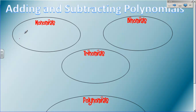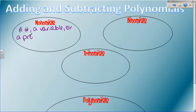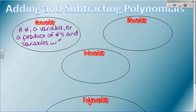We've done this before - when we did it before we called it adding like terms, but it's the same thing. The definition is really quick. A monomial is the first thing. That's how you say this word: monomial. Here's your definition for a monomial: it is a number, a variable, or a product of numbers and variables with whole number exponents.